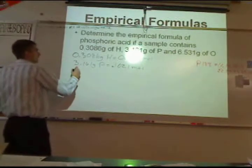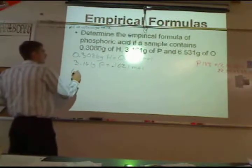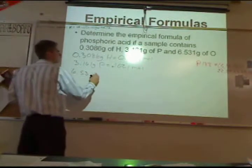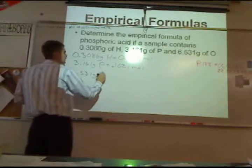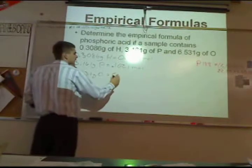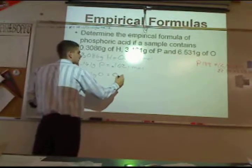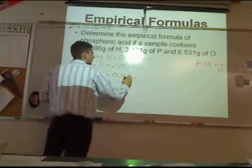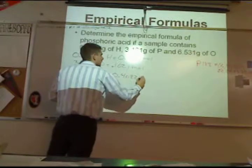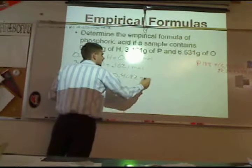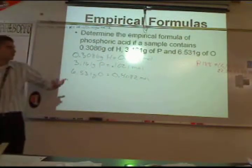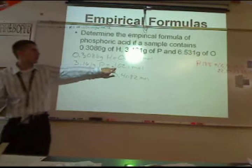And 6.531 grams of oxygen is going to give you 0.421 moles — so about 0.3 for hydrogen, 0.1 for phosphorus, and 0.4 for oxygen. You would then divide them all by the smallest value.